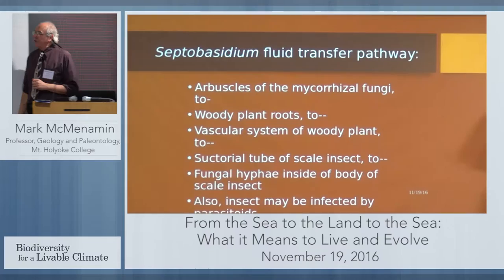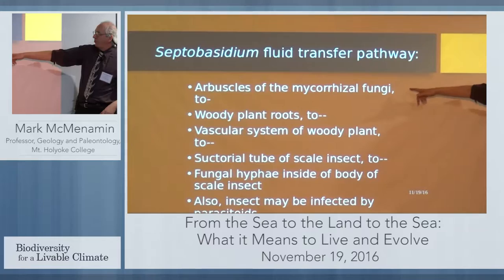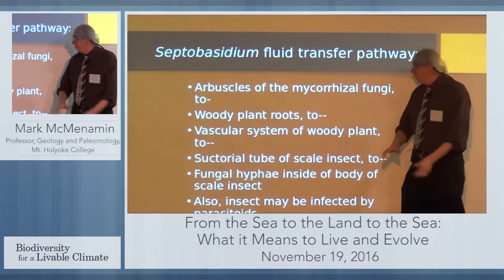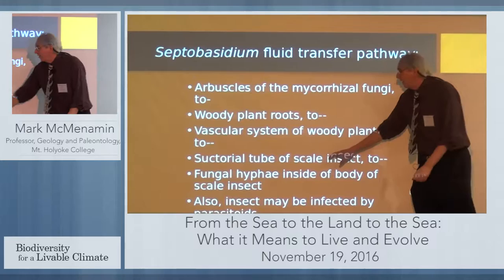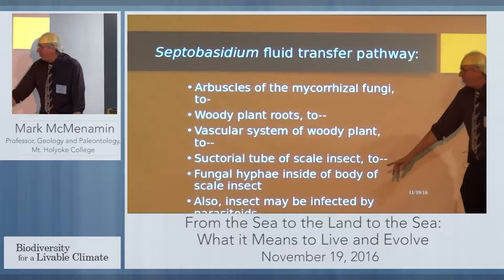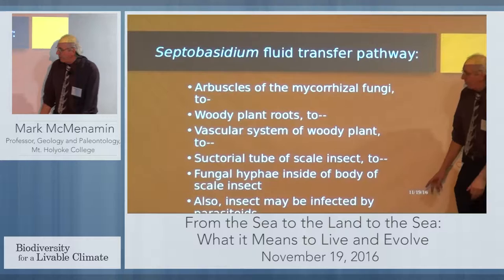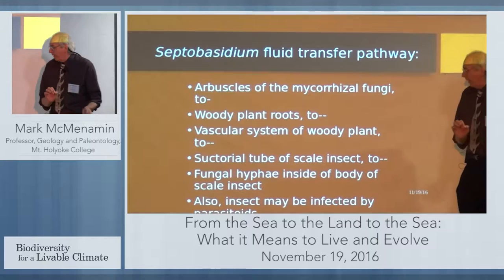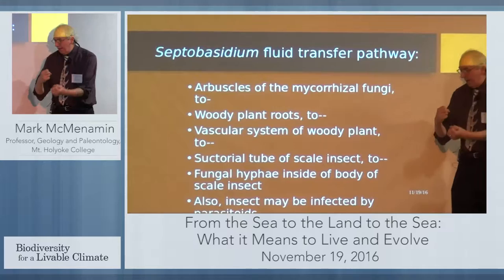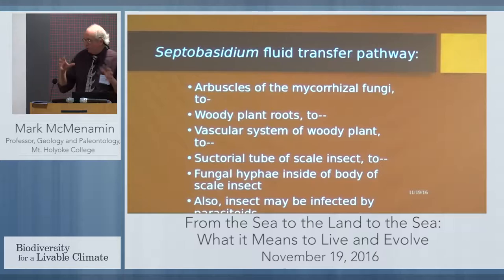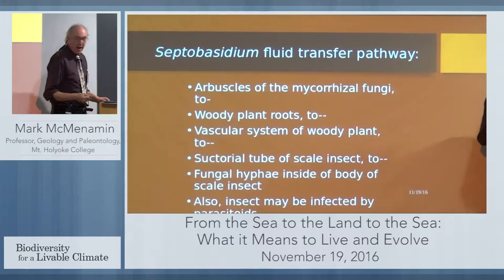We have a Septobisidium fluid transfer pathway from the arbuscles of the mycorrhizal fungi in the soil, to the woody plant roots, to the vascular system of the woody plant as it comes up the tracheid tubes, then to the sectorial tube of the scale insect, and then to the fungal hyphae inside of the body of the scale insect. In some cases you will also have parasitoids — wasp larvae that live inside of the scale insect at the same time that it has the fungi investing it. It becomes a very interesting microcosm of organisms where the living fluids are being used as a kind of aquatic environment. That's why we call it Hyper-C.